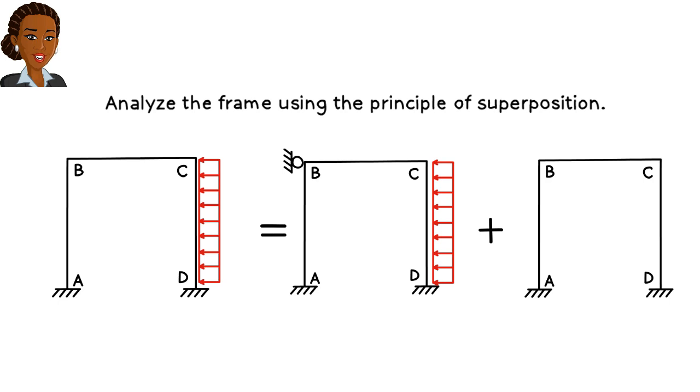Consequently, we end up with a horizontal reaction force at the top of the frame. Let's refer to the force magnitude as R. We know that R is zero in the actual frame.